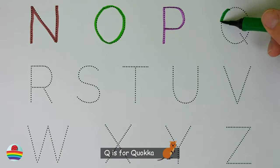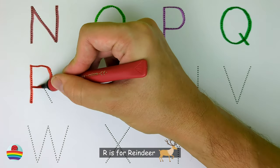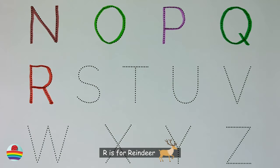Q. Q is for quokka. R. R is for reindeer.